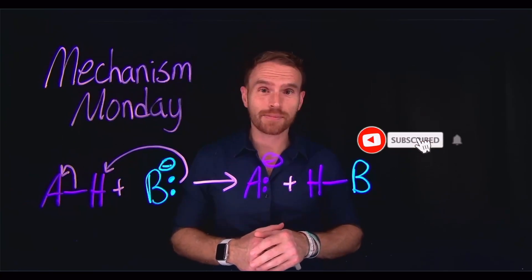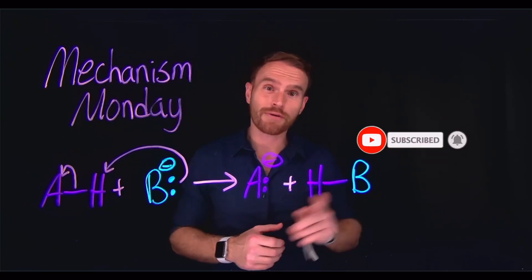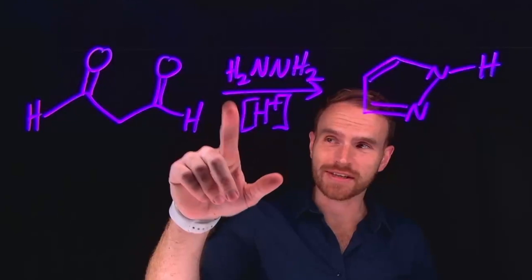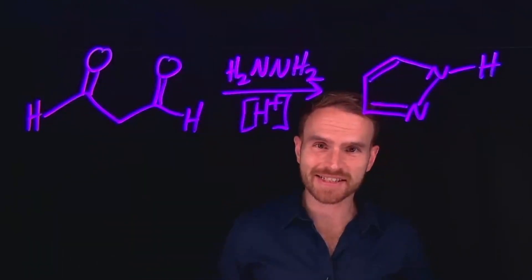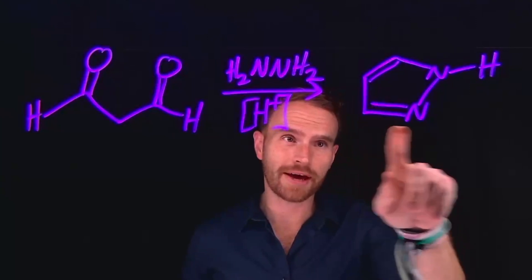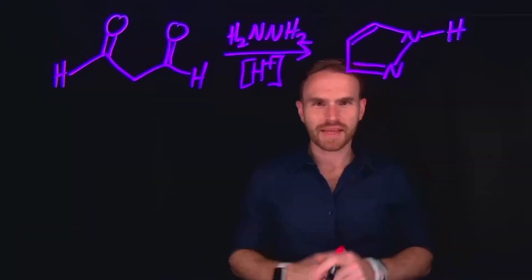Make sure you stick around to the end because I'll give you another mechanism to solve for next week's video. Using hydrazine and a dialdehyde species is a classic example of a method used to form heterocycles, in this case pyrazole. Importantly,